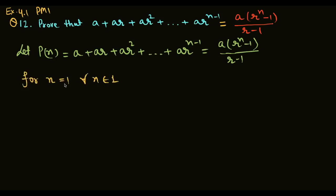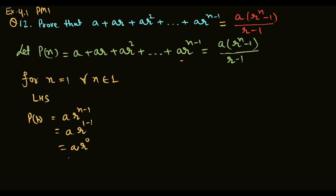For n = 1 के लिए check करते हैं। Left hand side में P1 की 1st term देखते हैं। आप nth term में भी put कर सकते हैं — arⁿ⁻¹ यह nth term है। ar¹⁻¹ = ar⁰, और anything power 0 is 1, it means a × 1 = a आ जाएगा। तो P1 की LHS value A आई है।